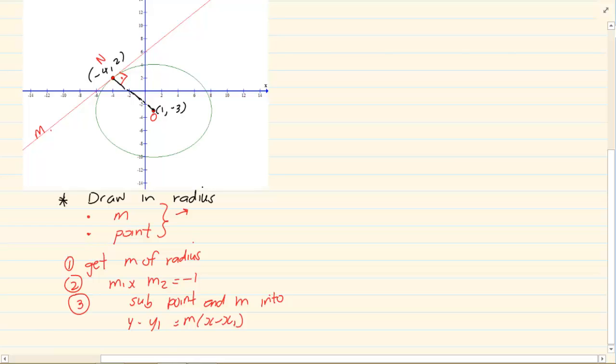How are we going to do this work? Number one, you're always going to get M of the radius. This is important because sometimes you won't get the radius in your drawing. You have to draw it in. And if you don't think to draw it in, you're stuck. So remember, draw your radius if it's not there and get the M of your radius.